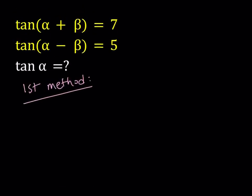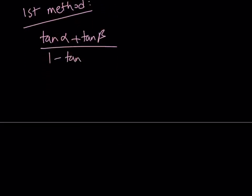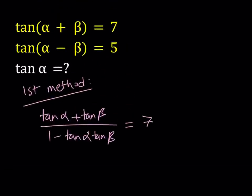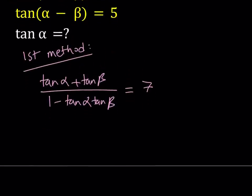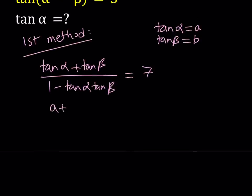I'm going to be using the formulas for tangent of a sum and tangent of a difference. Tangent alpha plus beta can be written as tangent alpha plus tangent beta divided by 1 minus tangent alpha times tangent beta. And let's set it equal to 7. Now at this point it might be meaningful if we just use substitution. So let's say let tangent alpha equal a and tangent beta equal b.